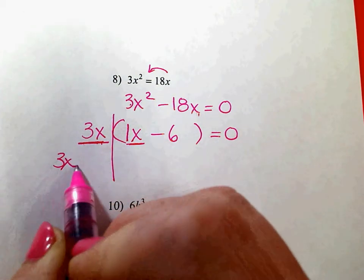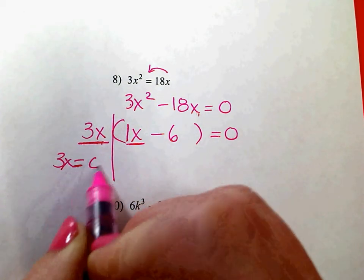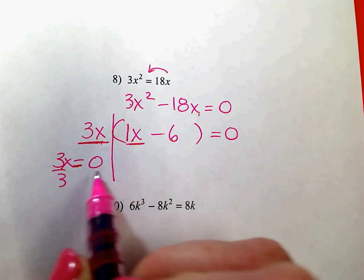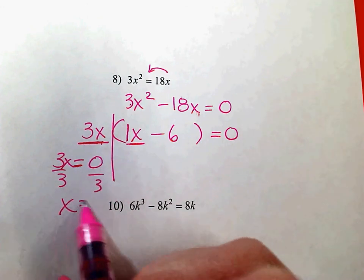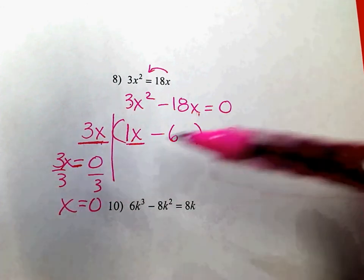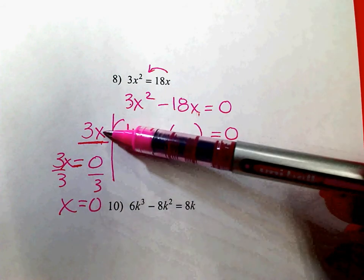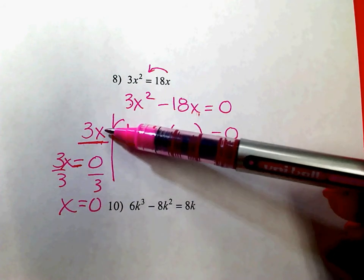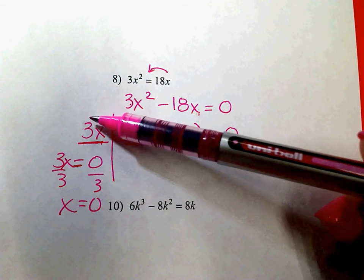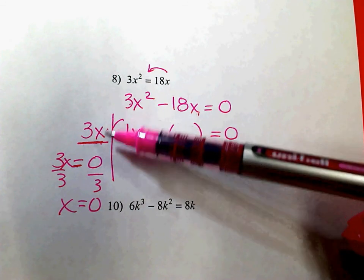If 3x is equal to 0, then when you solve this for x, x is 0. I have a lot of people who feel like the answer right here should be negative 3. And I know it's because you're thinking of addition. 3 plus negative 3 is 0.